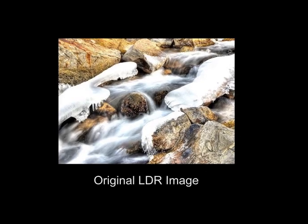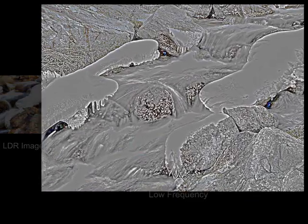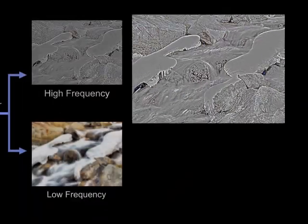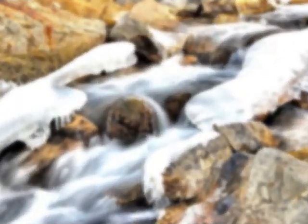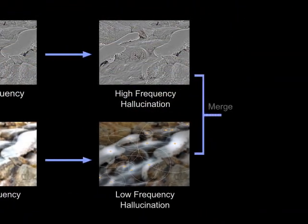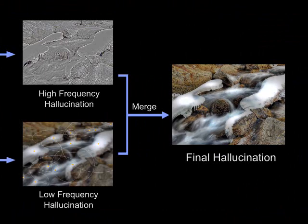Here we show how our system works internally. Basically, we decompose the original photograph into a high-frequency texture and a low-frequency illumination component. We hallucinate the high-frequency texture by constrained texture synthesis and the low-frequency illumination by automatic Gaussian fitting. Finally, we combine these two components together for the final result.